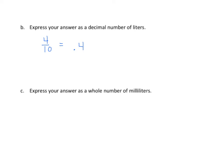The next part is express your answer as a whole number of milliliters. We have 4 tenths equals 4 tenths times 1 liter, which equals 4 tenths times 1,000 milliliters. When we do that, we move the decimal 1, 2, 3 places to the right, and we get the answer 400 milliliters.